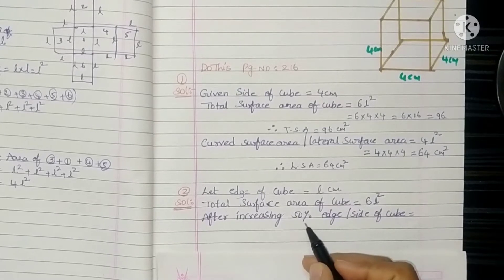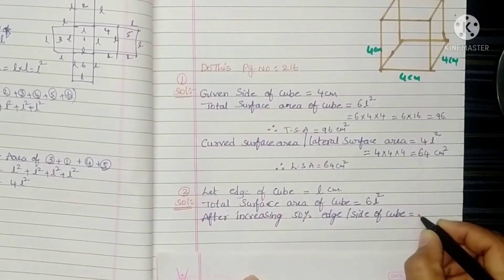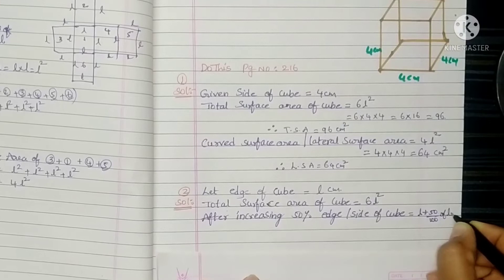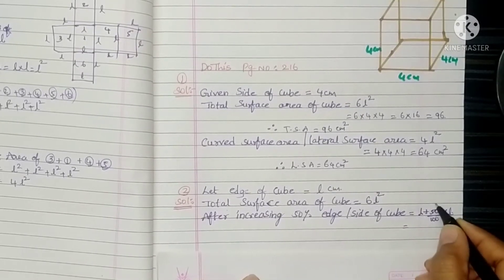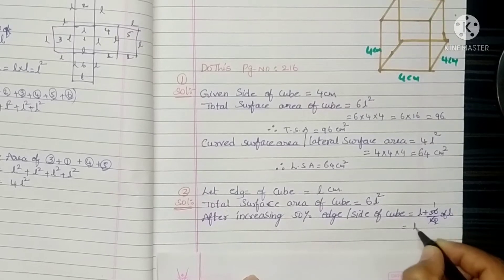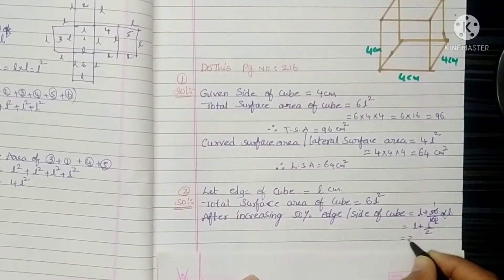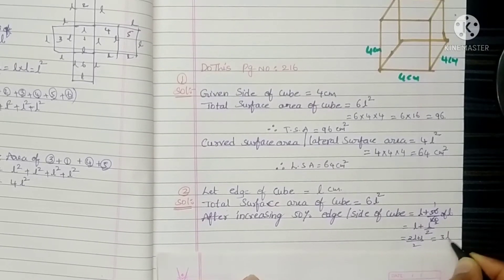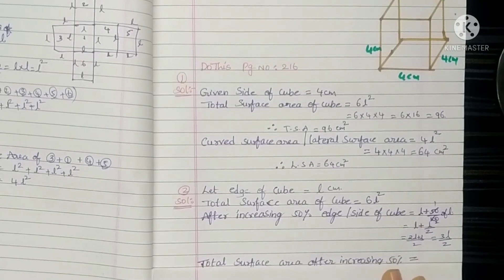After increasing by 50%, the new edge is: original edge L plus 50% of L, which is L plus L/2. That equals 2L/2 plus L/2 = 3L/2. So after the increase, the new side of the cube is 3L/2.